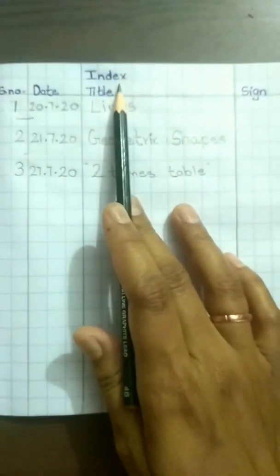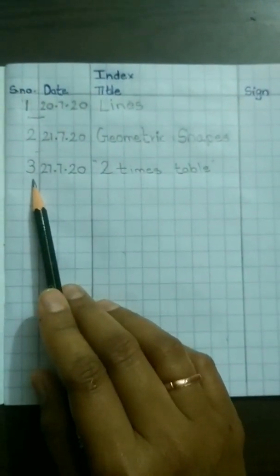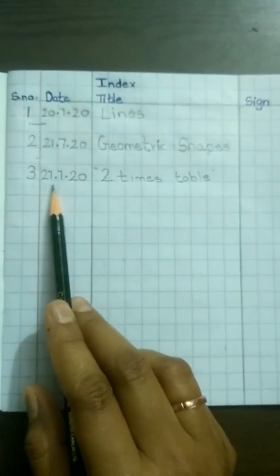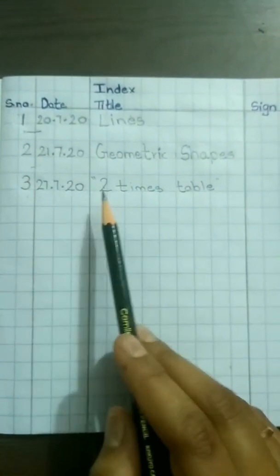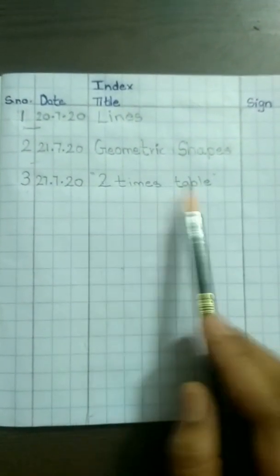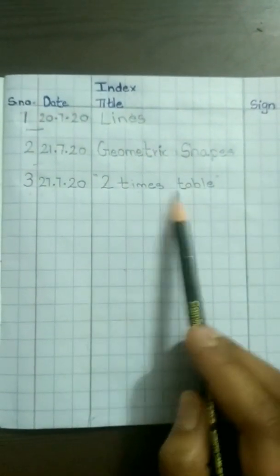Good morning children. Now let's see how to write tables in our Maths CW book. When we open the index page, we have to write the details of our third topic. That is serial number 3, date: today's date 27.7.20, and the title of this topic is 2 times table. I repeat: 2 times table.